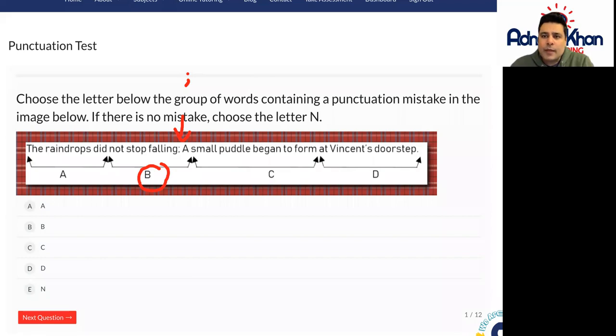But the problem is that we have a capital A straight after the semicolon. We don't need a capital A. It can be a small 'a' because it's a semicolon, which works like a comma.